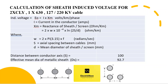Now we will calculate sheath-induced voltage for a single-core 630 square mm, 127/220 kV cable. The induced voltage depends on the current in the conductor and the reactance of the sheath or screen. W is dependent on system frequency, S is the distance between conductors, and DS is the effective mean diameter of the metallic sheath.